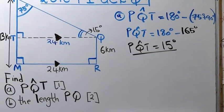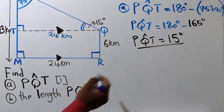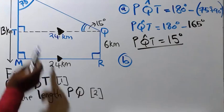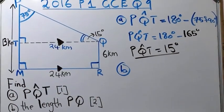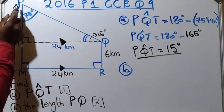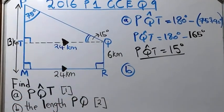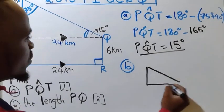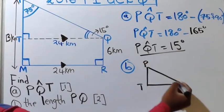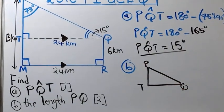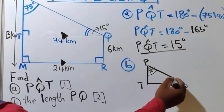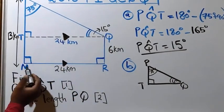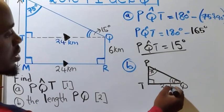Now we go to question (b): find the length PQ. Looking at triangle PTQ — we have angle T at 75 degrees, angle at Q is 15 degrees, and the right angle of 90 degrees at T. TQ equals MR, so TQ is 24 kilometers.